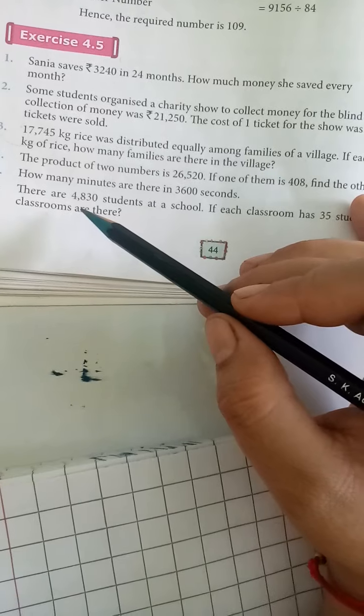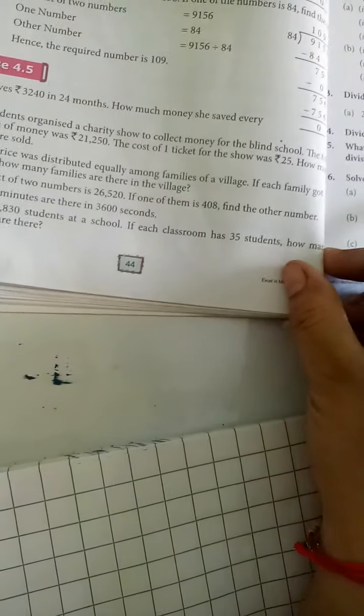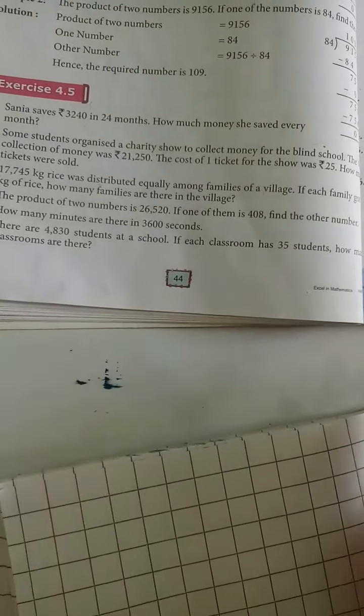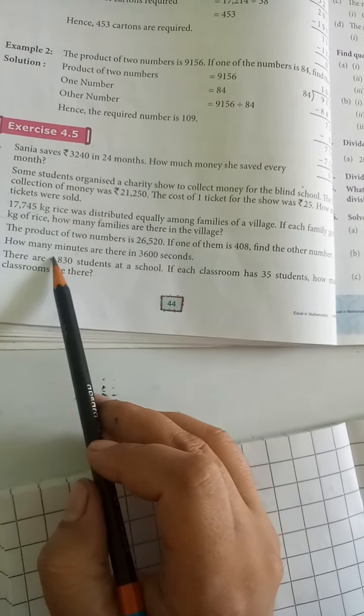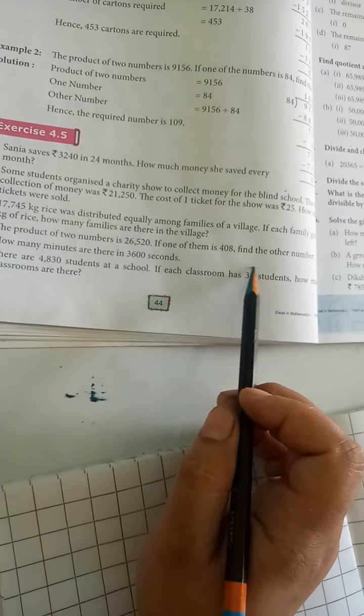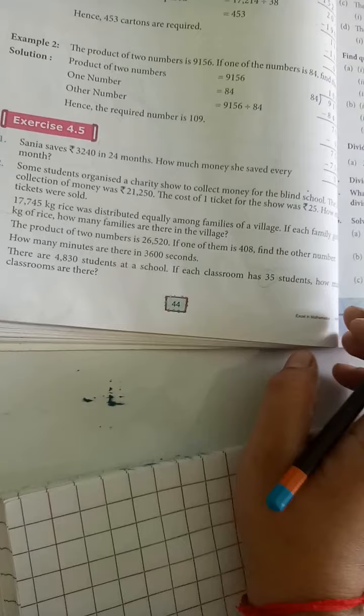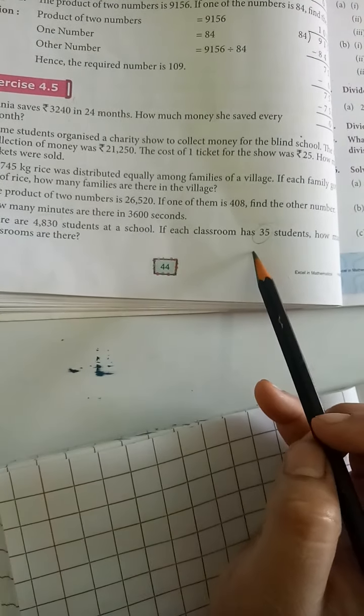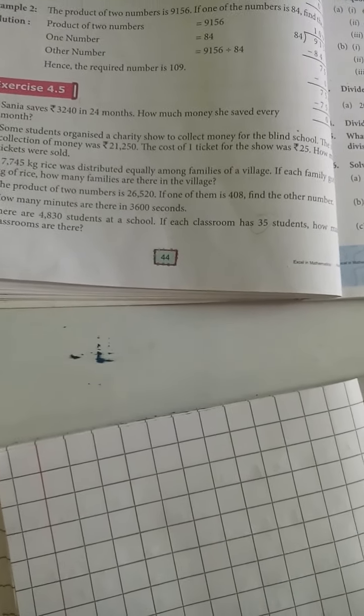Now we have question number 6. There are 4,830 students at a school. If each classroom has 35 students, how many classrooms are there? Total students are 4,830. Each class has 35 students. How many classes are there? We have to find out. How will we do it? 4,830 divided by 35. So this question you have to do on your own. Have a good day students.